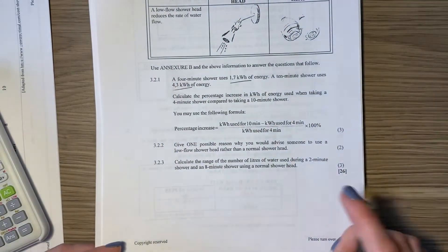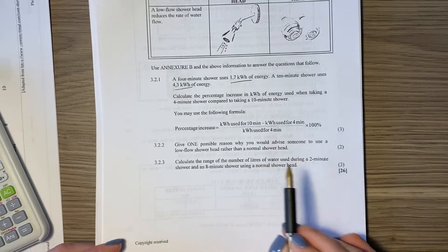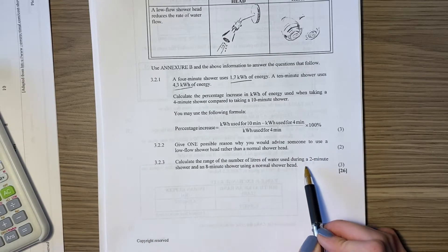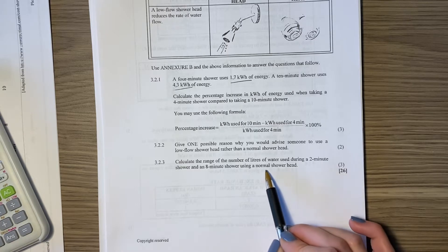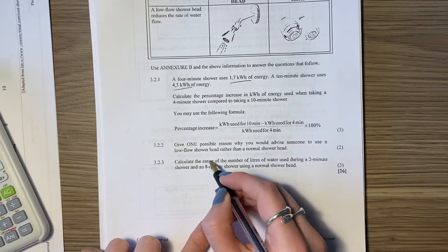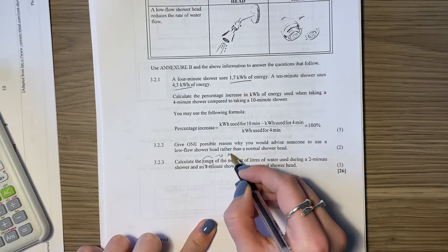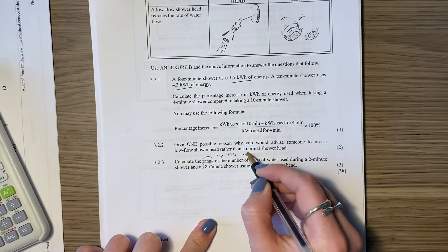Then let's continue with our next one. Calculate the range of the number of liters of water used during a two minute shower and an eight minute shower, using a normal shower head. Now, what does range mean? Range means our max minus our min.